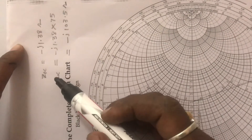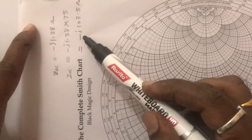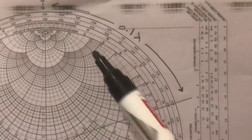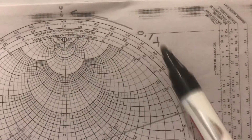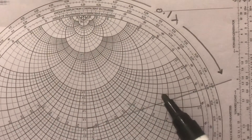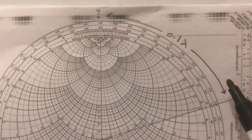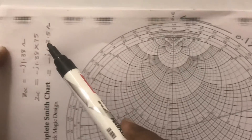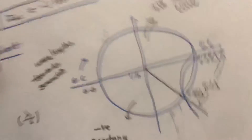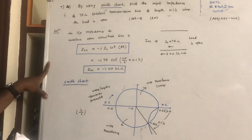These are all normalized values, so multiply by the characteristic impedance to get the original value. Therefore Zoc = -j1.38 × 75 ≈ -j103.5 ohms. This is how to answer this question — a very simple question. Theoretically you can check the same answer. Thank you.